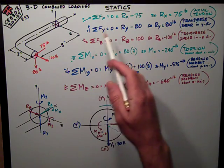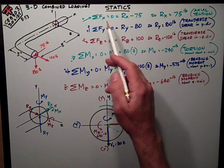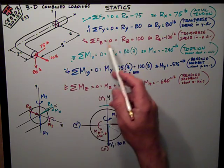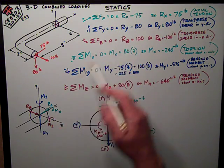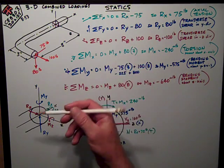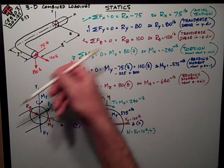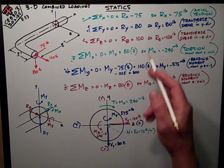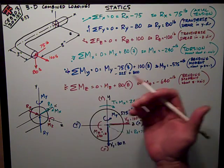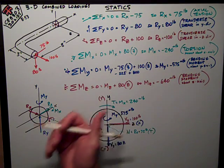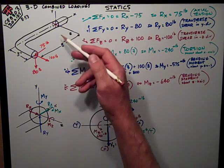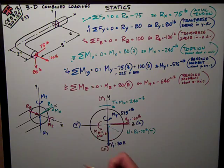Then I'm continuing on with a statics problem. I want to do sum of forces in the X direction equals zero. The only thing I have is my RX reaction, and the force in the X direction is a 75-pound force, so RX equals 75 pounds. I've assumed RX positive away from that cut surface, so it's in tension.